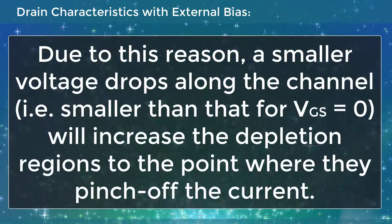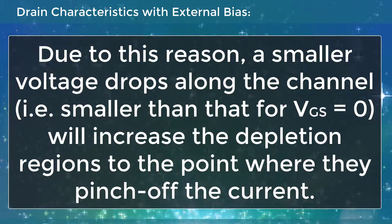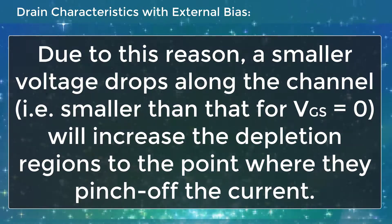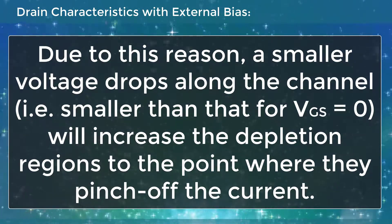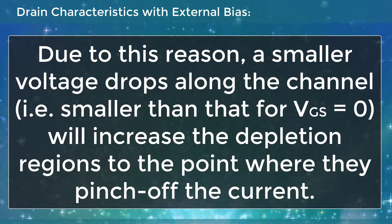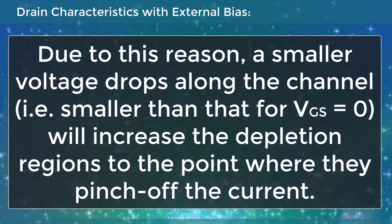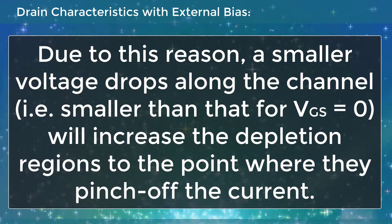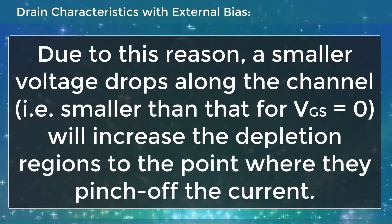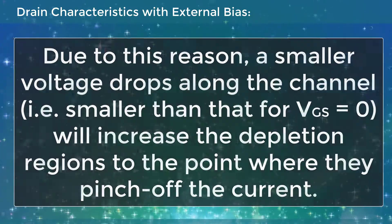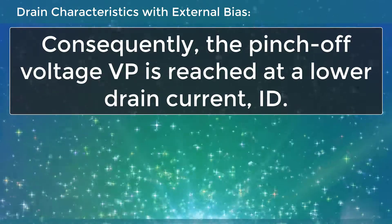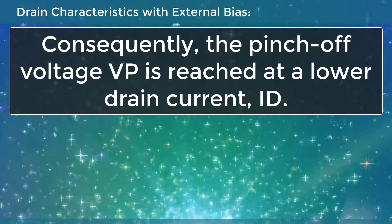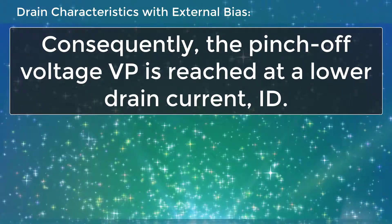Due to this, a smaller voltage drops along the channel — smaller than that of VGS equal to 0. This will basically increase the depletion regions to the point where they pinch off the current. Consequently, the pinch-off voltage VPS is reached at a lower drain current ID.